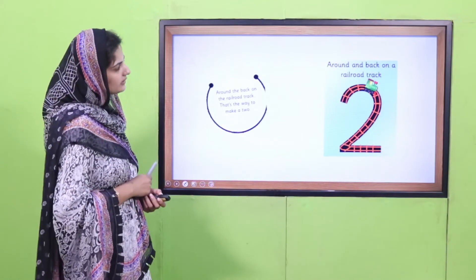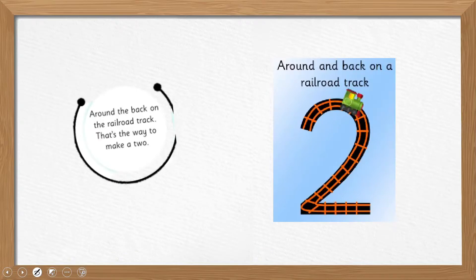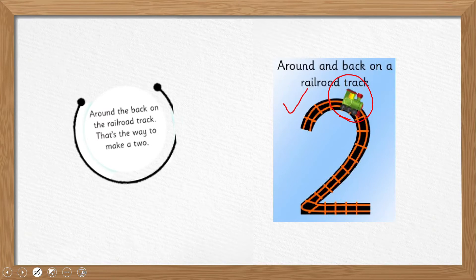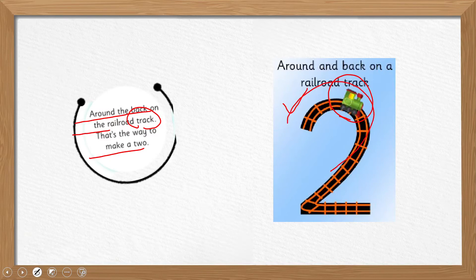Aapki poem bhi di hui hai book ke uper, aur hum us poem ke mutabiq number two banayenge. Dekho — railway tracks banate hain. Aap iski activity bhi conduct kar sakti hain — railway tracks banao aur uske upar rail ka engine run karo. Aur hum kya padhenge: 'Around the back, on the railroad track, that is the way to make a number two.' Phir se: 'Around the back, on the railroad track, this is the way we make number two.'